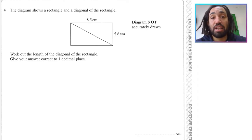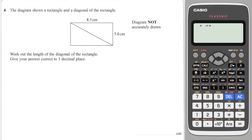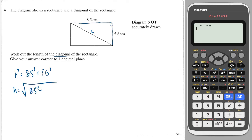Okay, first question: you get given the width and the length of a right angle triangle and it's asked to work out the diagonal. So we're going to use Pythagoras's theorem, and that diagonal — let's call it H — H squared is equal to the two shorter sides squared added together, like this.